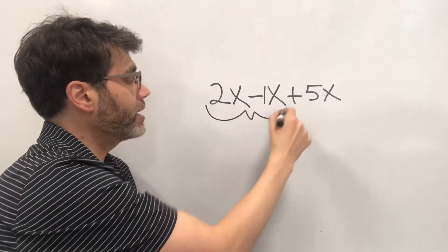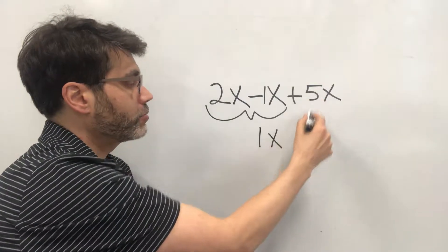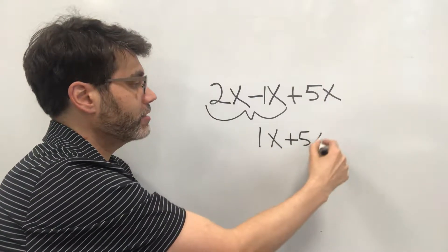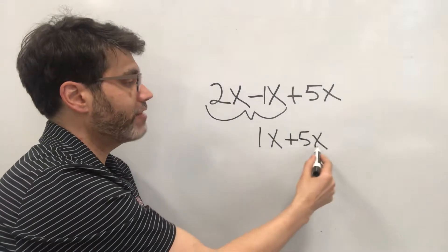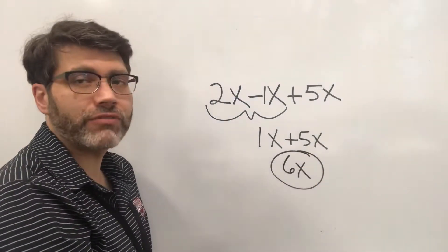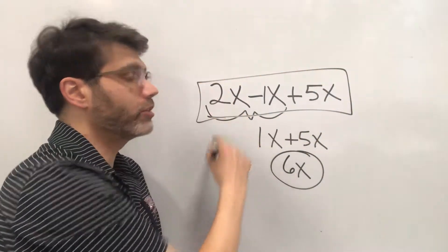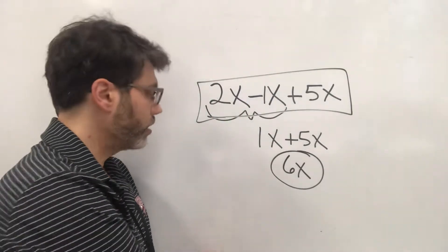So 2x's minus 1x will give you 1x. Let's bring this down to 5x again and if you have 1x and you add 5x's you have 6x. So 6x is the simplified or boiled down version of this original expression. Let's do another one.